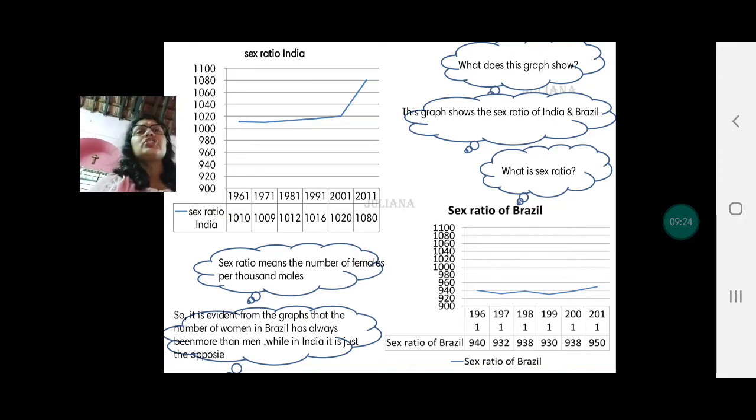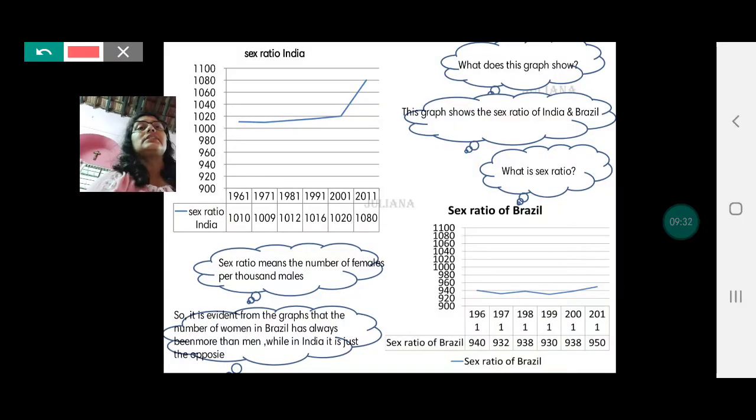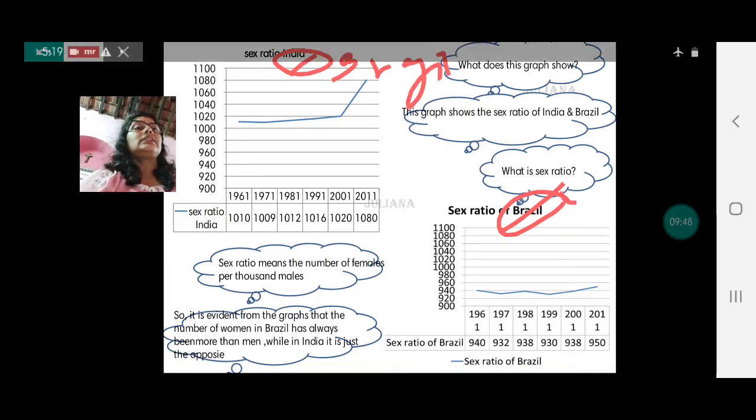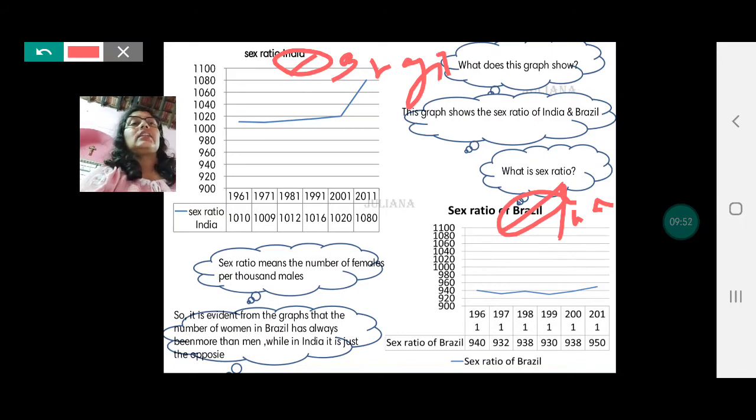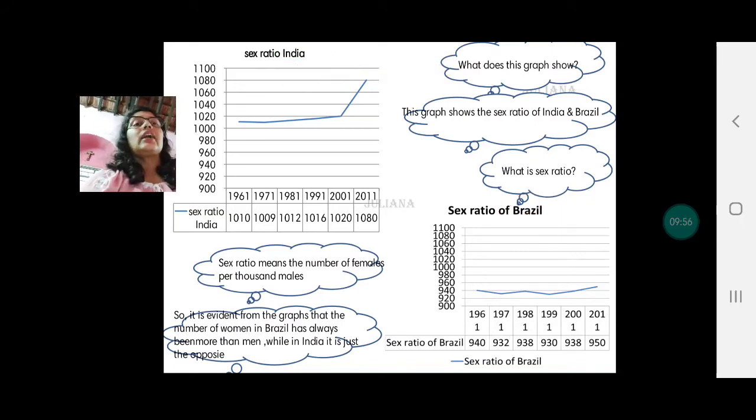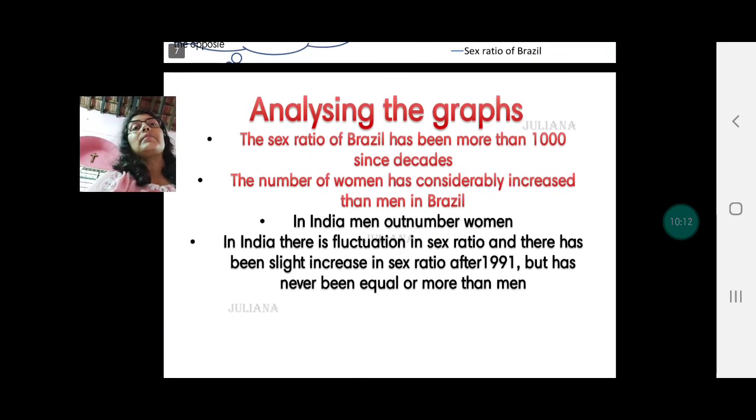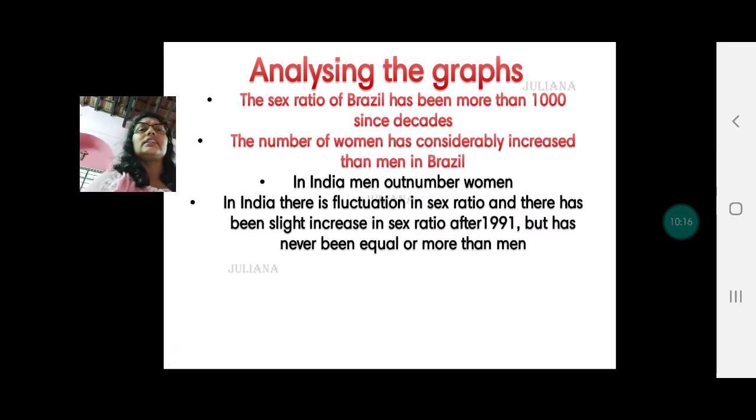After which year was there a tremendous rise in female population in Brazil? Please note there is a little mistake here. This should be Brazil and this is India. So please kindly make that change in your map. What you see after 2001 there has been a tremendous rise in women population in Brazil. But in India, though it has increased slightly, it's not significant.